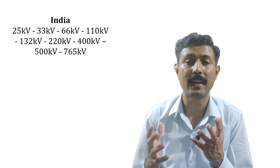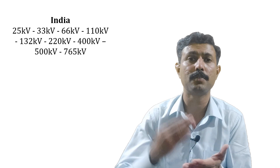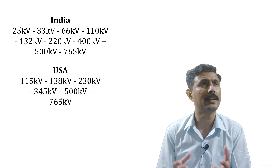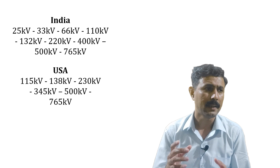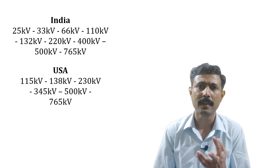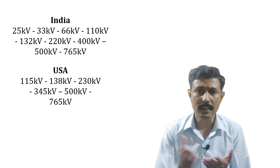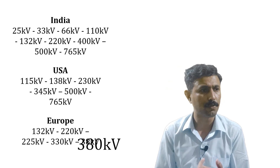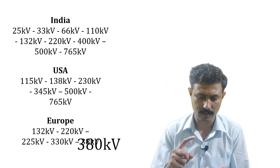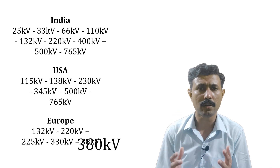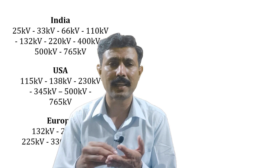If you want true multiples of 11, it should be 440 kV, 550 kV, 770 kV — but that's not what is used. In the USA, they use 115 kV, 138 kV, 230 kV, 345 kV, 500 kV, and 765 kV — not all multiples of 11. Even in Europe, they use 132 kV, 220 kV, 225 kV, 330 kV, and 380 kV. So you can see there is no consistent multiple of 11 across these countries.